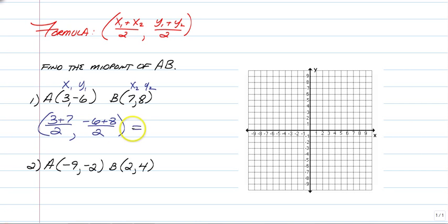And just figure it out. 3 plus 7 is 10, divided by 2 is 5, comma, negative 6 plus 8 is 2, divided by 2 is 1, and you're done.